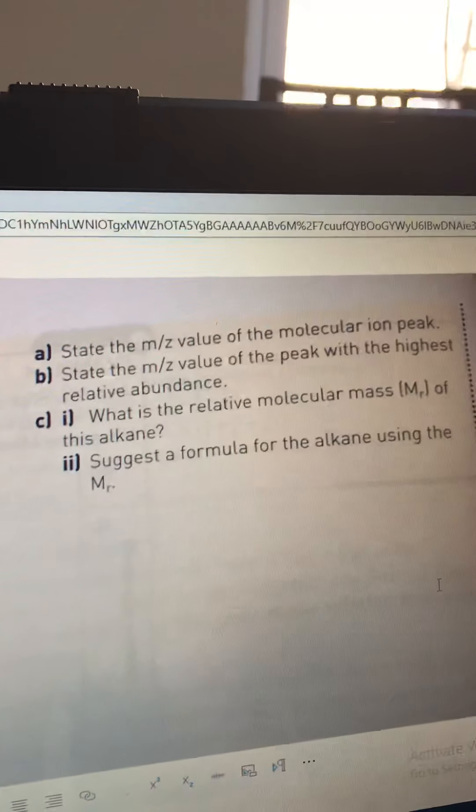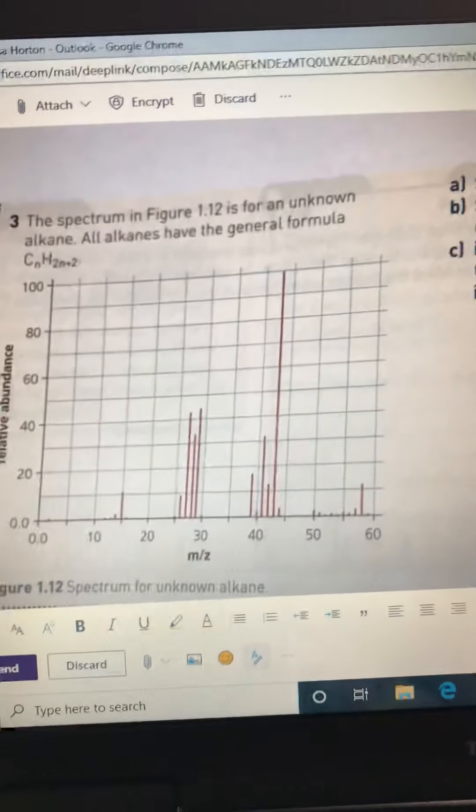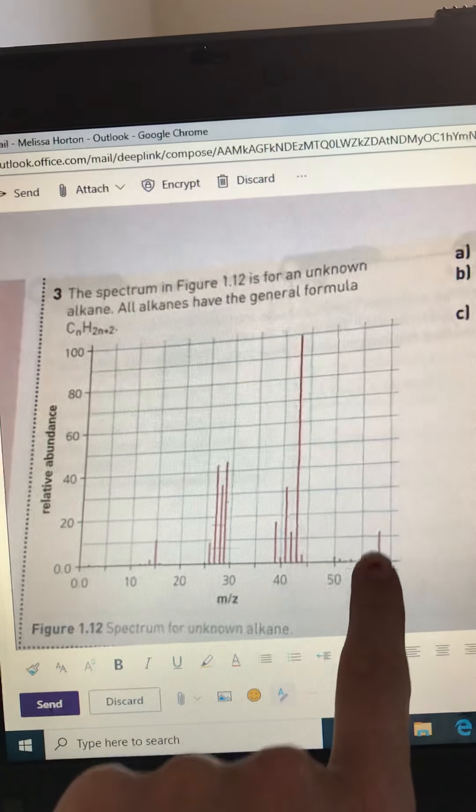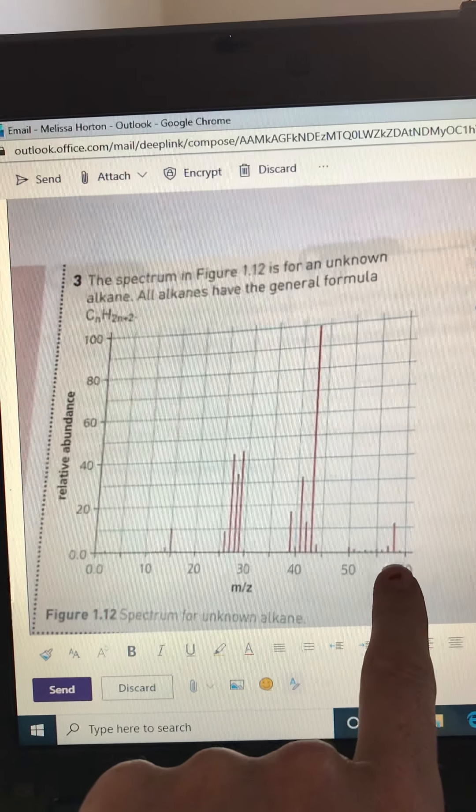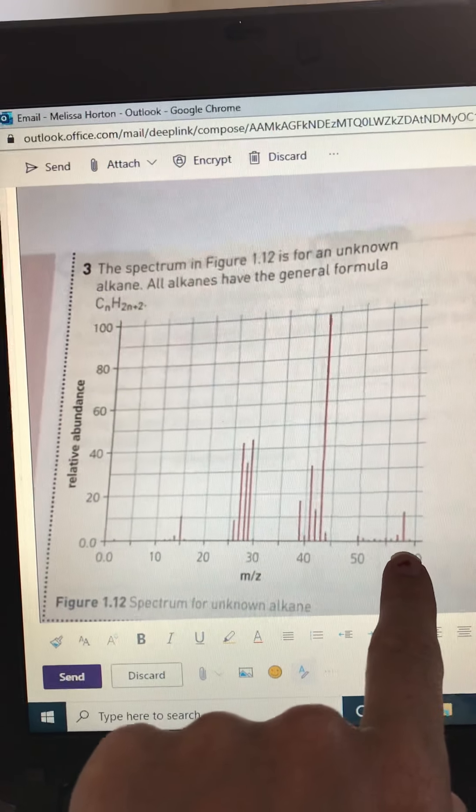Okay, question c: what is the relative molecular mass or Mr of this alkane? Well, we've actually already answered that question because the Mr of the compound is going to be whatever the value was for the molecular ion peak.